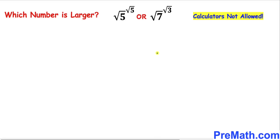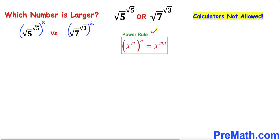Let's go ahead and get started with the solution. Here's our very first step: let's go ahead and square both of these numbers. Now let's recall the power rule — according to this rule we can multiply out these nested exponents on both sides. So the left hand side number could be written as square root of 5 raised to the power 2 times square root of 5.